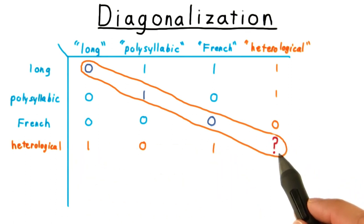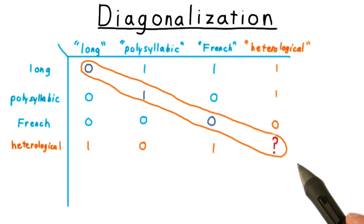What about heterological, however? If we say that this is heterological, causing us to put a one here, then it applies to itself, so it can't be heterological.